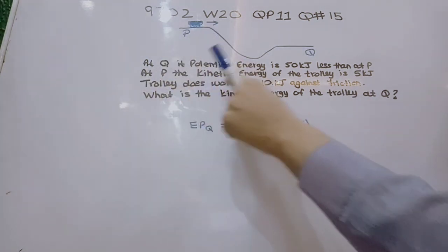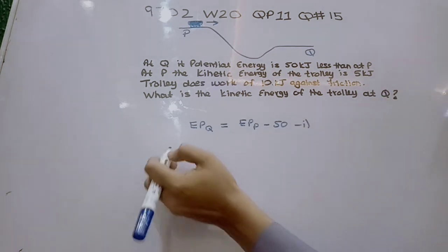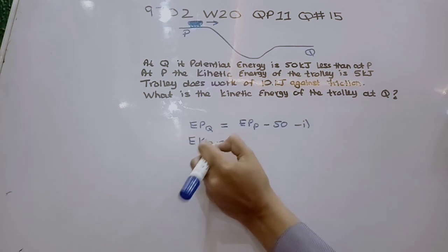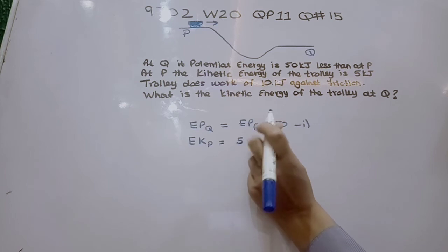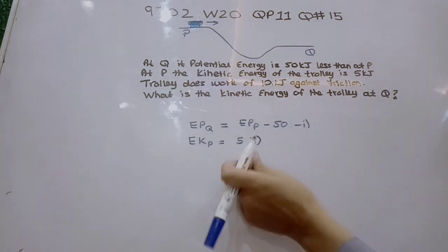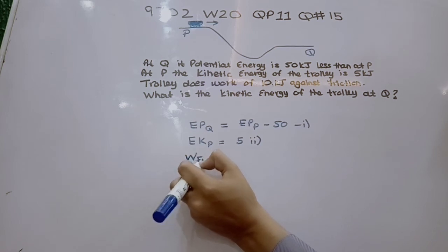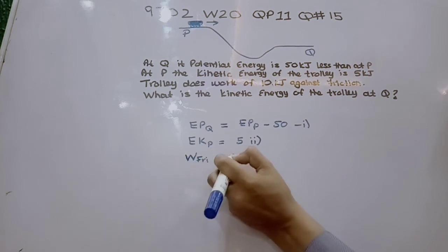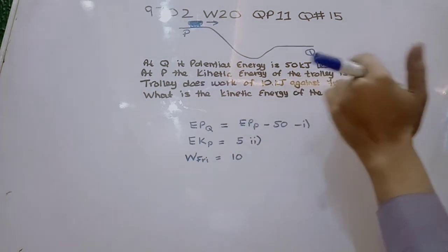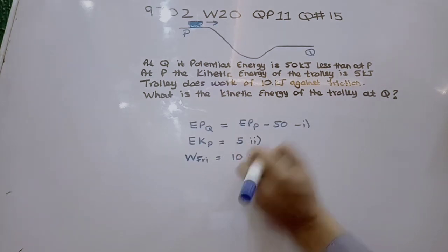It says at P the kinetic energy of the trolley is 5 kJ, so kinetic energy at P equals 5 kJ. Further, the trolley does work of 10 kJ against friction, so work against friction equals 10 kJ. These are our known values.